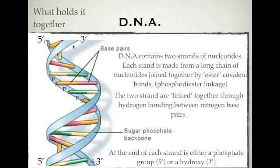This doesn't matter too much in chemistry — it's more important in biology. But in chemistry, what you need to know is: if you have a 5-end up here with a phosphate group, moving all the way down, at the other end you'll have your hydroxy group — the 3-end. And these two strands complement each other: 5 is complemented by 3, so you've got a 5 at one end and a 3 on the other strand at the same end.